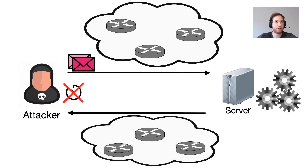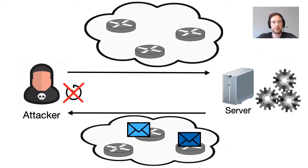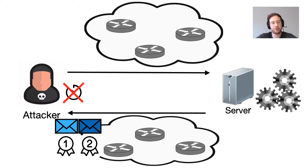The attacker constructs two requests to two different processing tasks — one which is considered the baseline, where the attacker knows how long it takes. He then sends these to the server, constructing them in such a way that they will arrive simultaneously at the server. This can be done by placing them into a single network packet. We can see that the light blue response was generated first, meaning the associated processing task took less time than the dark blue one.